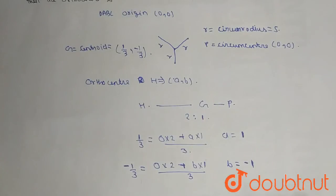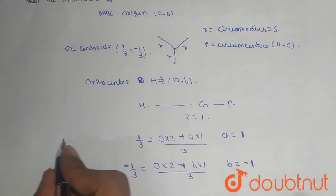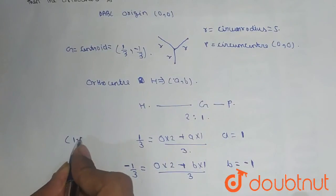So the orthocenter of the given triangle is (1, -1).